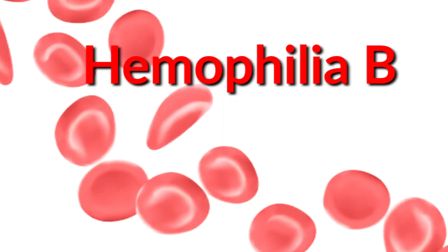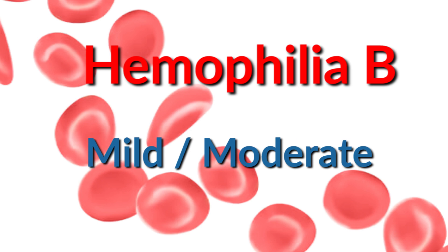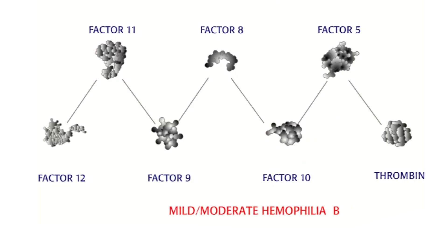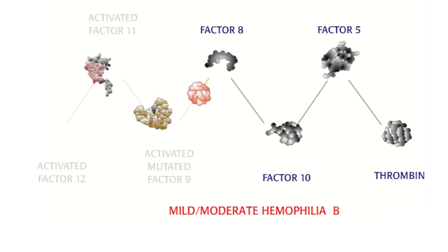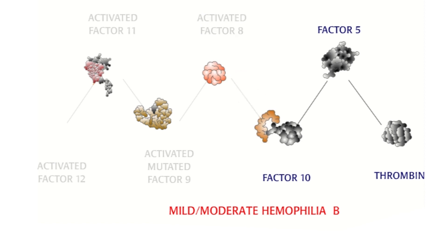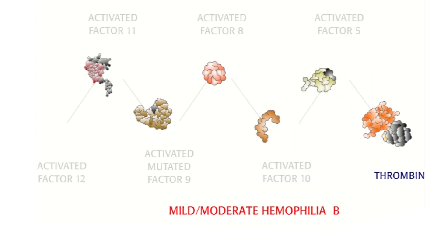If factor 8 is normal but the person still has hemophilia, a change in factor 9 is usually the culprit. This disorder is called hemophilia B. In mild or moderate hemophilia B, a small mutation in the gene leads to a slightly dysfunctional factor 9. The protein works occasionally to activate thrombin, and stable clots are eventually formed.